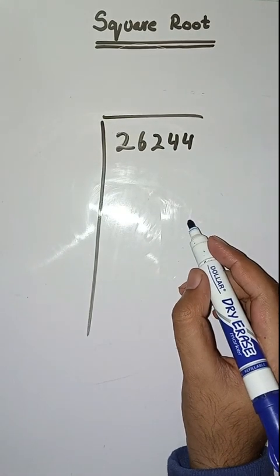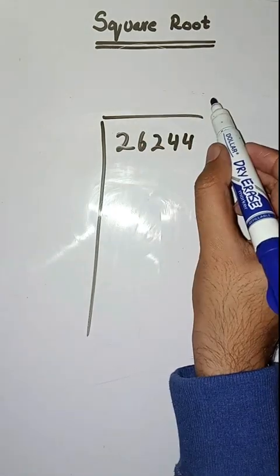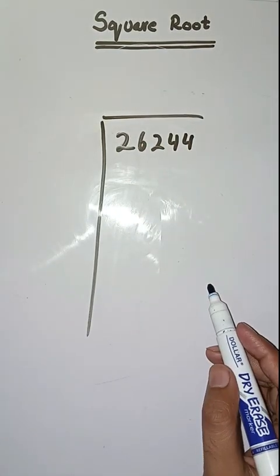Hello students, hope you all are fine. Welcome to my channel. Today we will learn how to find square root. We have to find square root of 26244. So first step is we have to make pairs from right to left.